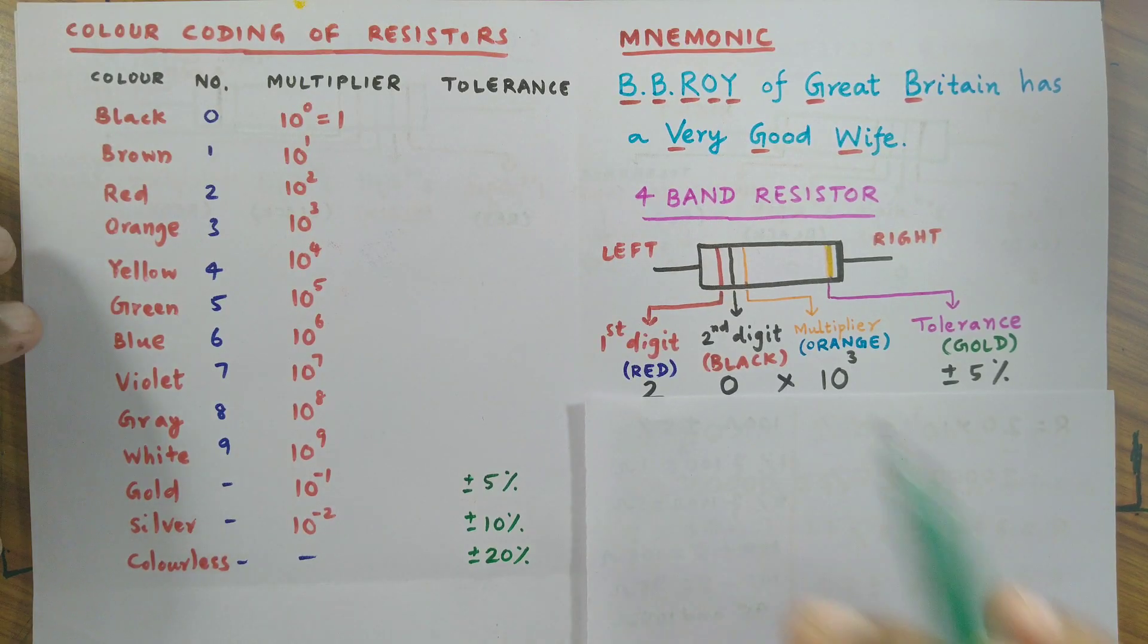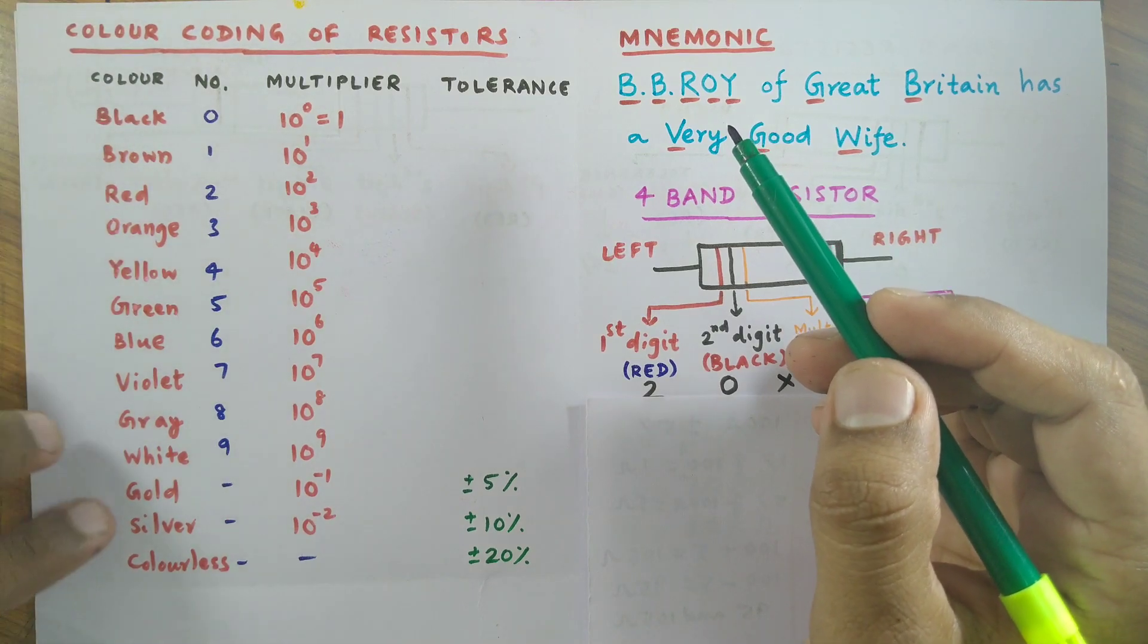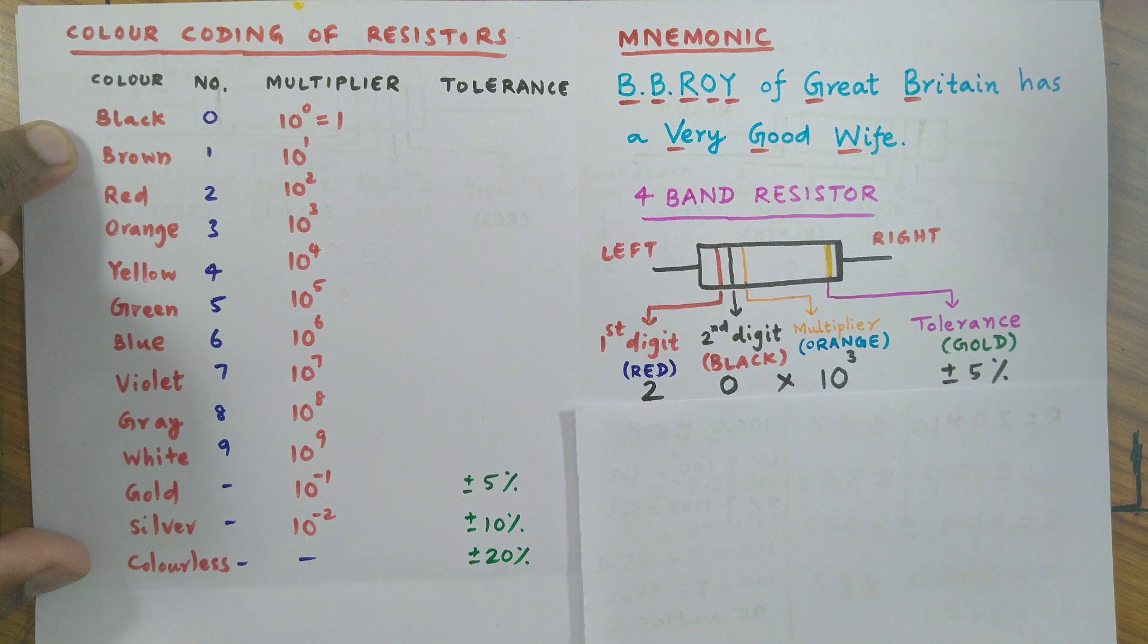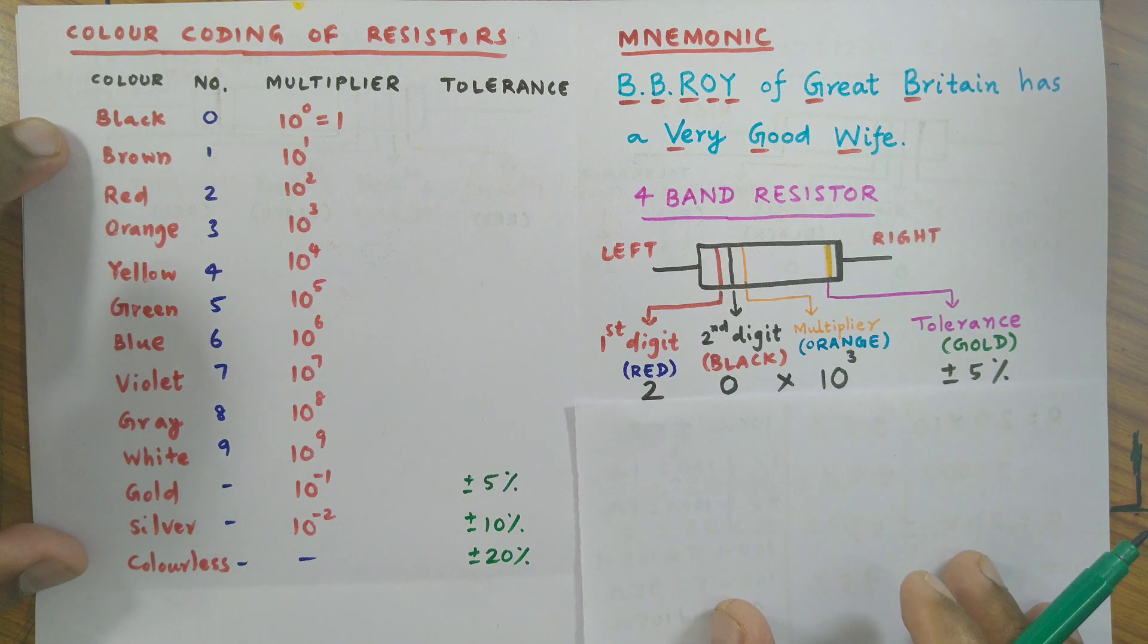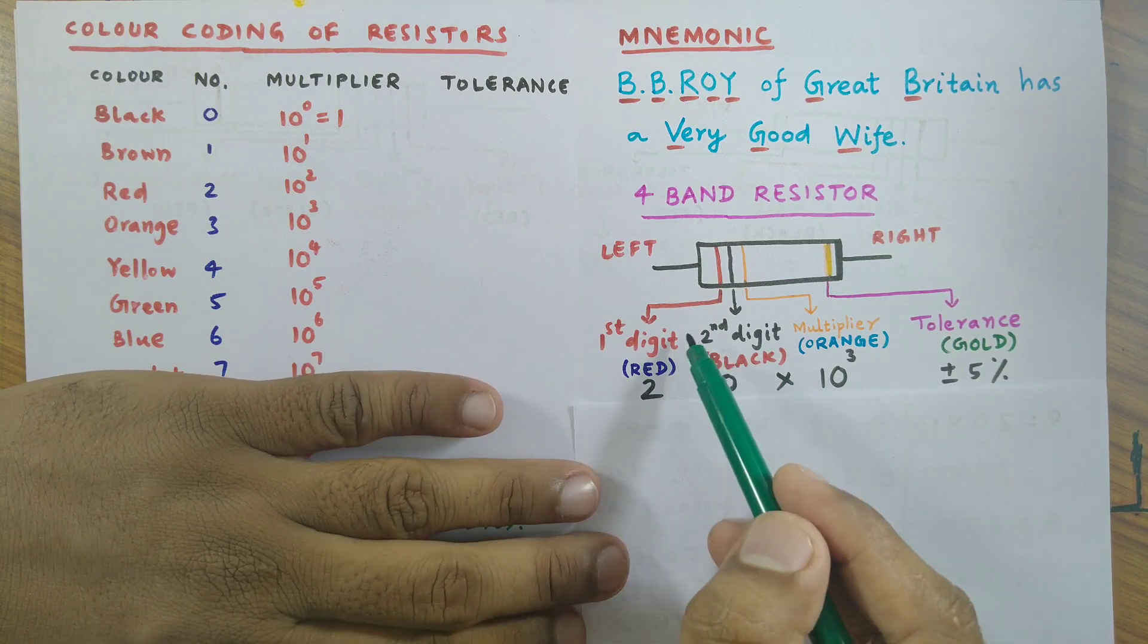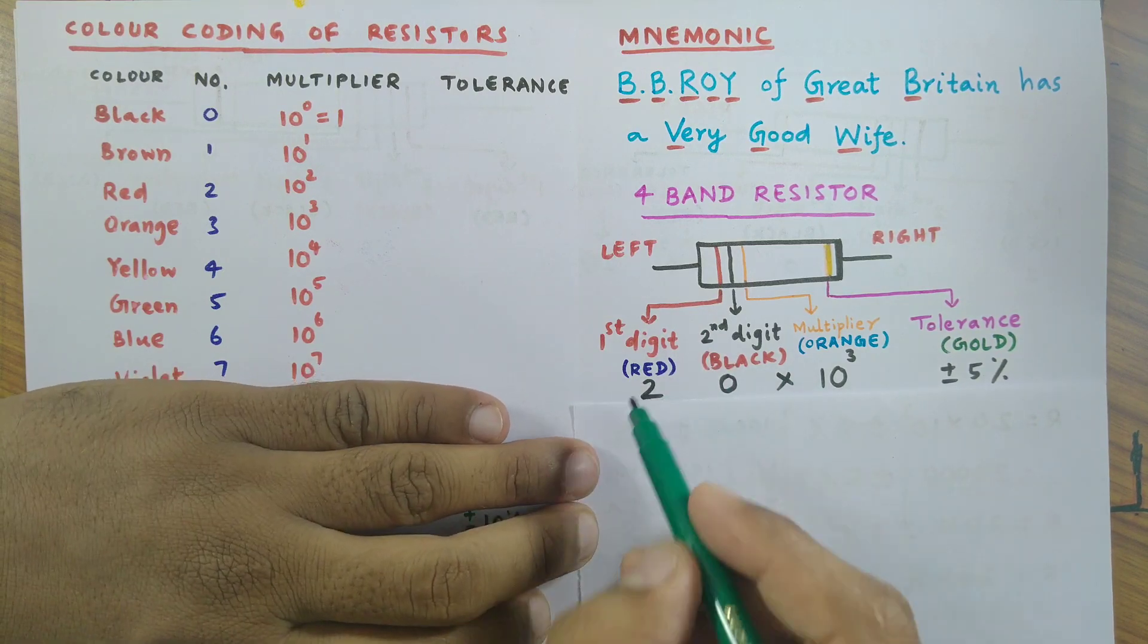Here's how one can easily remember all these colors along with their values with the help of this mnemonic. Now let's go ahead. Now the example that we have taken: the first ring is red in color, which represents two from this tabular column, the first digit.